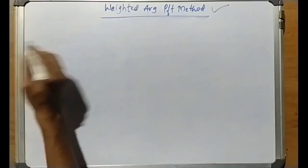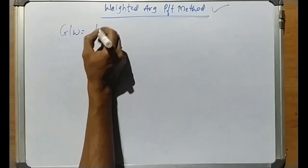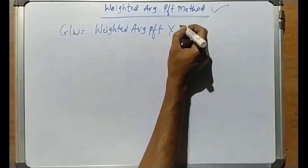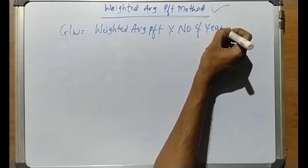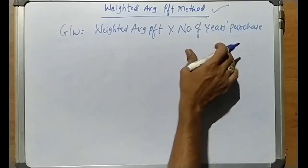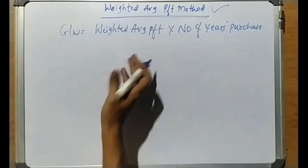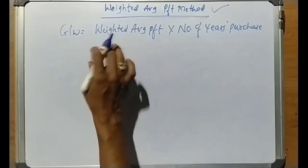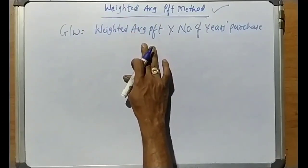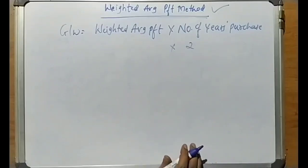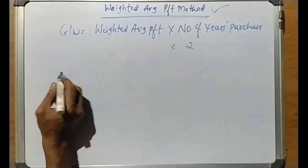We have the goodwill calculation formula: goodwill is equal to weighted average profit into number of years of purchase. The number of years of purchase is fixed. In the previous Simple Average Profit Method, we just consider the average profit. Now, in the Weighted Average Profit Method, we need to find out the weighted average profit. We use a table with columns: Year, Profit, Weights, and Product.